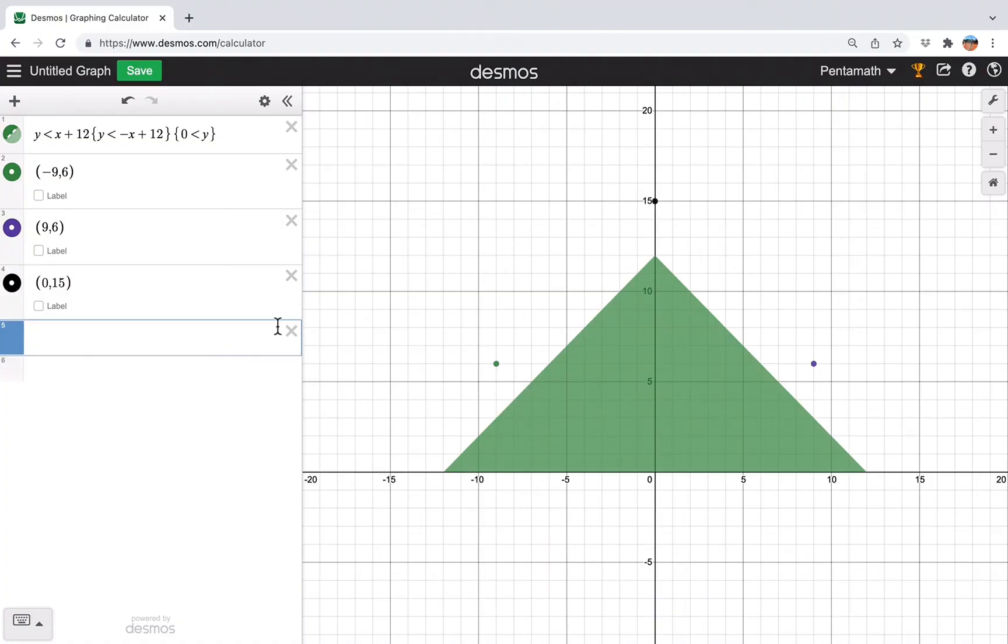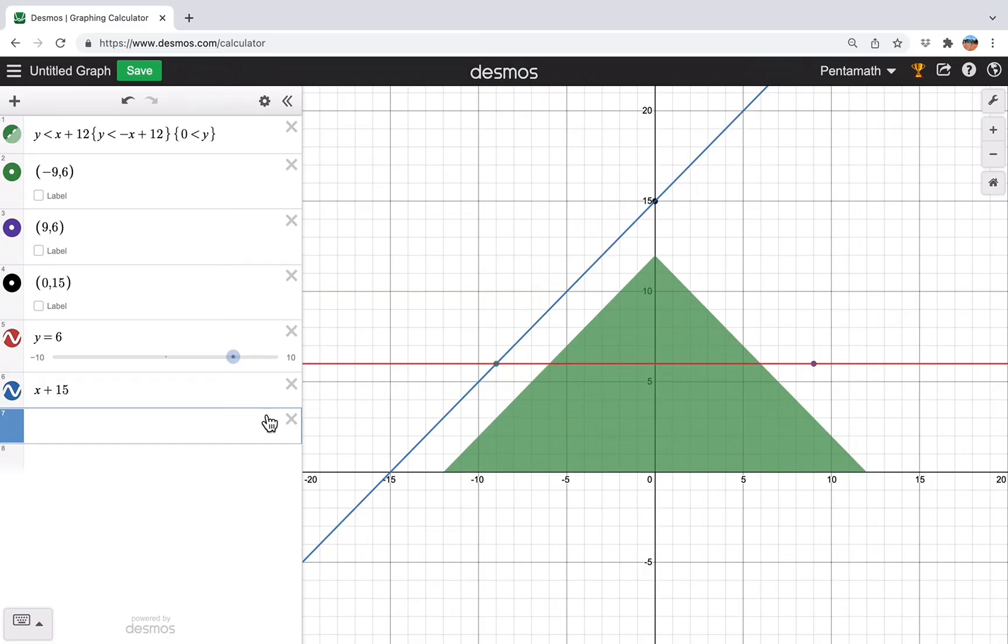And then again, we just need to draw the lines for these. So the first one is just y is 6. Then we also have y equals x plus 15. Then we also have y equals negative x plus 15. It's just the same forward.